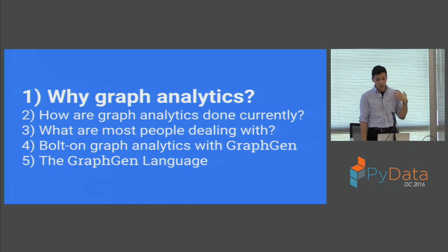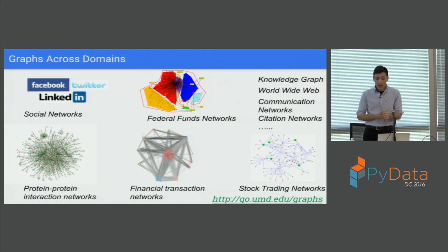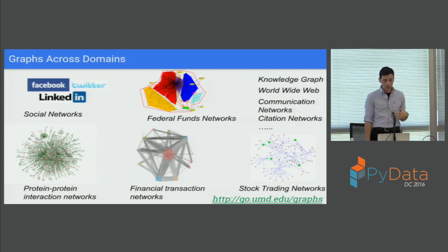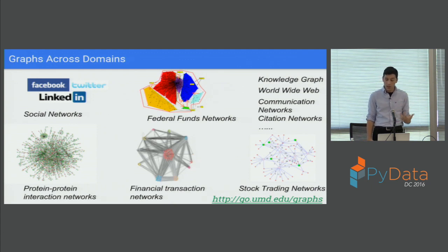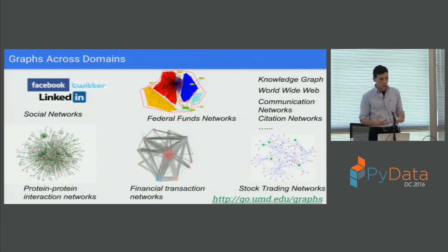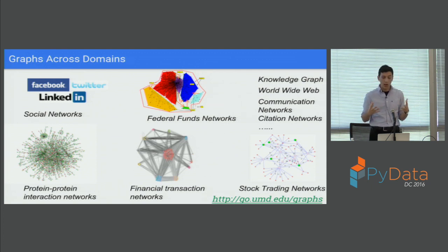So what's the big deal about graph analytics? Why should we care? Graphs come up in a variety of different domains. The first thing that comes to mind is social networks — Facebook, Twitter, LinkedIn. But you also find these complex structures in biology and genomics, protein interaction networks, financial transaction networks, stock trading networks, knowledge graphs used for AI, the internet and the world wide web, communication networks, citation networks, and computer networks.